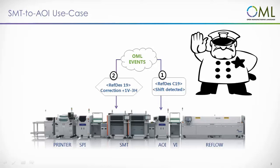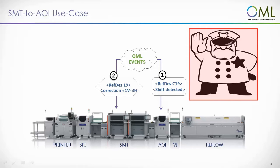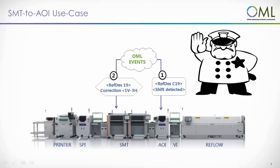Using OML, things can be different. If the AOI machine detects an error, it can generate an OML event notifying of the defect detected. The controlling application can now immediately and autonomously stop the line, alert the operator, and communicate to the SMT machine the required placement offset adjustment in real time. Although your first board would have to be repaired, the rest of the boards will be produced with the change implemented already.